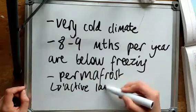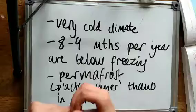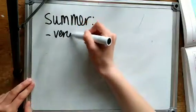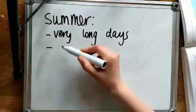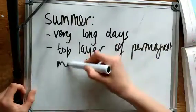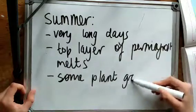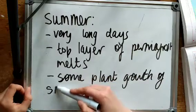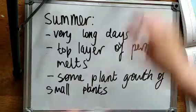And that results in an active layer, which is about a metre of melted soil. So during the summer months, the days are very long, with only a few hours of night, if any hours. The top layer of permafrost melts, and this is known as the active layer. So this allows some plants and vegetation to grow in the active layer. These are small, shrubby plants, so there's no large trees.